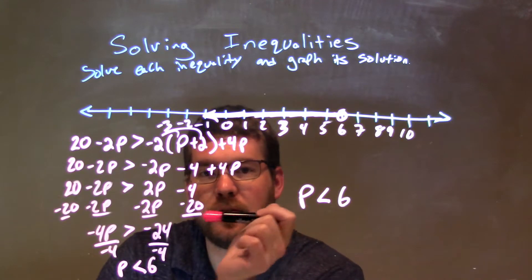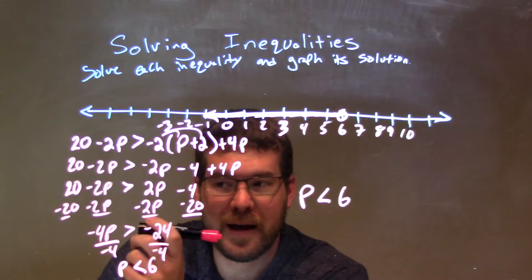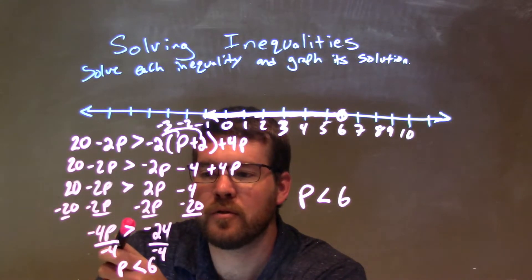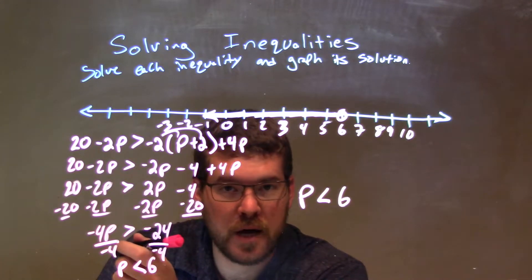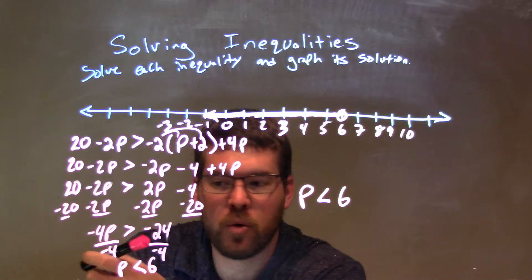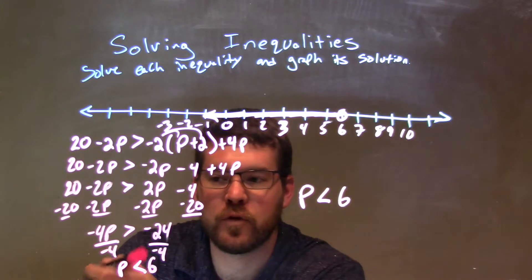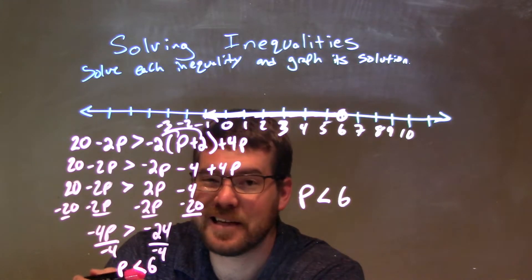I then brought my p to the left and my numbers to the right. That gave me negative 4p is greater than negative 24. Then, I divided by negative 4 to both sides, and I divided over the inequality causing the inequality to flip from greater than to a less than sign.